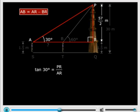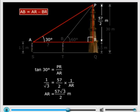PR we know is 57 by 2 or 28.5 divided by AR. This should be equal to tan 30°, which is 1 by root 3. So AR is 57 root 3 by 2.